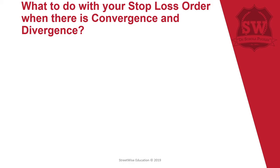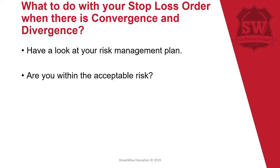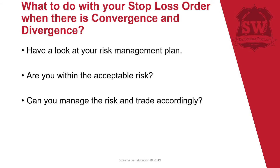Now, stop-loss orders with your convergence and divergence: make sure you look at your risk management plan. If you don't have one, you're really in trouble. What is the acceptable risk for you? You've got to look at those things — everybody has different rules and risk plans, so I can't tell you what it is, but you need to work it out. Also, can you actually manage the recent trade accordingly?